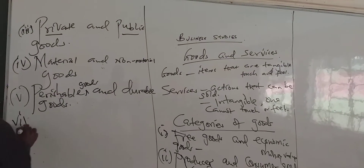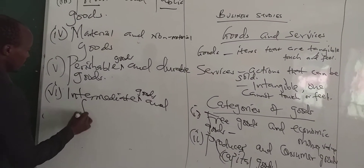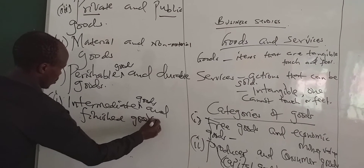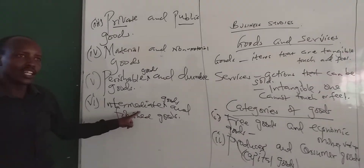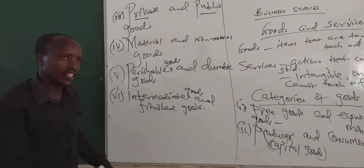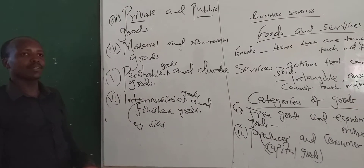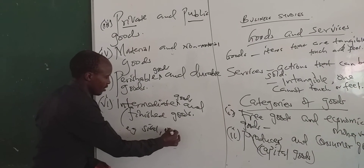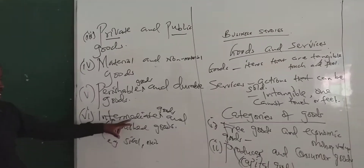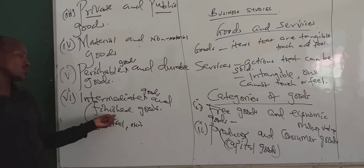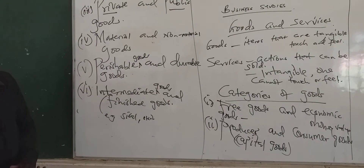The final category is intermediate goods and finished goods. Intermediate goods are those goods taken as raw materials — they are goods which are not usable in their current form and need to be processed further. For example, cotton needs to be processed further to become more useful, and even a skin can be processed into a shoe. Finished goods, on the other hand, are goods which do not need any further processing — they are just usable in their form. Those are the six categories of goods.